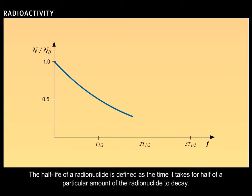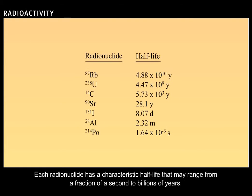The half-life of a radionuclide is defined as the time it takes for half of the particular amount of the radionuclide to decay. Each radionuclide has a characteristic half-life that may range from a fraction of a second to billions of years.